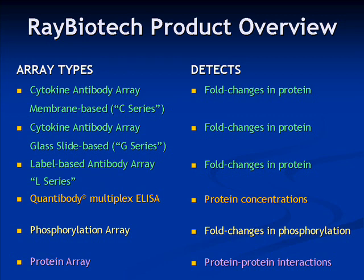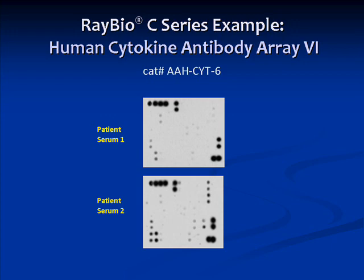We will now present examples of common uses of RayBiotech's arrays. Here we have an example using human cytokine antibody array 6. In this experiment, serum samples from two different patients were tested with the array. The presence of various cytokines were then detected, yielding an inflammatory signature for each patient. Levels of inflammatory molecules were considerably higher in patient 2.